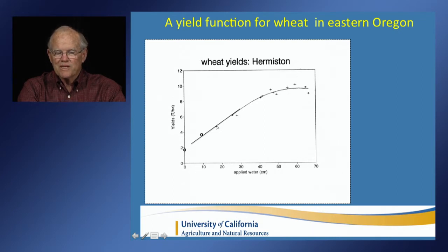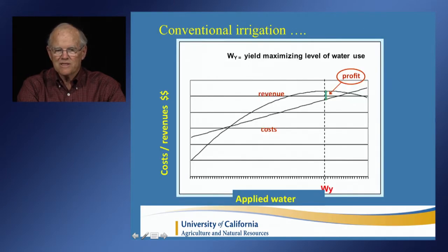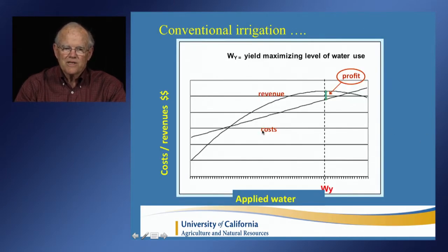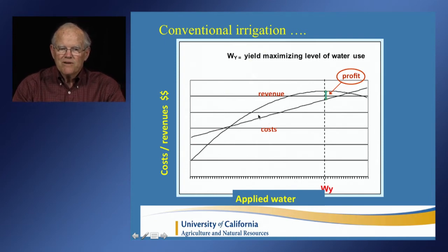If you imagine multiplying the production function by a crop price — this is wheat, so let's say $6 a bushel — you get a revenue curve representing revenue in proportion to water applied. If we overlay a cost function on that, you get a related relationship. The cost function begins at an intercept above zero because of fixed costs of irrigation: capital investment, energy hookup charges, and so on. Then costs rise with water use, reflecting energy costs, labor, maintenance, and so on. So you have a revenue curve and a cost curve.